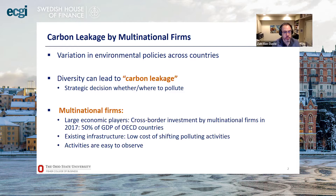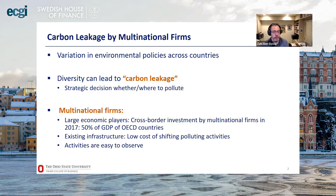The paper is about carbon leakage by multinational firms. Different countries have different environmental policies. We are interested in looking at firms that are multinational — meaning they have operations across different countries — and exploring where their CO2 emissions are. Multinationals are the largest economic players: in 2017, cross-border investment by multinationals was about 50% of GDP of OECD countries. They also have existing infrastructure, making it easier to shift activities. Their activities are easy to observe since they are often public companies that report their emissions.